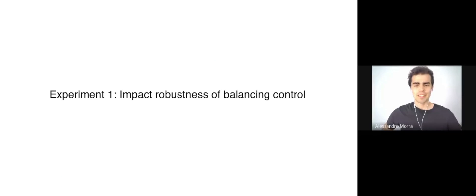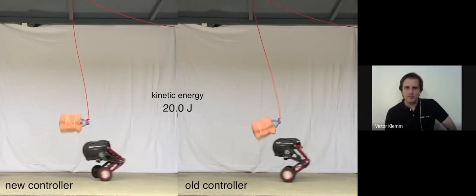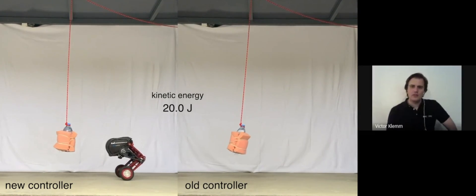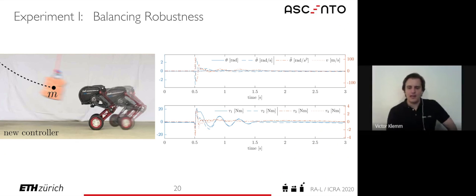Okay, but is it now better than the old controller? Yes, not only is it more versatile, it is also more robust as shown in this experiment. During impact the wheel motors saturate at 3.5 newton meters, showing that constraint optimization is indeed at play here.